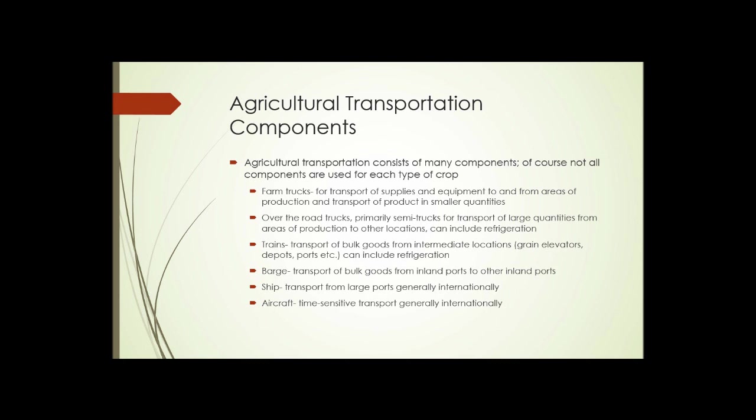Next, barges. Barges transport bulk goods from inland ports to other inland ports. Primarily, barges operate on rivers. For instance, a port near Kansas City, Missouri on the Missouri River — goods can be transported down to the Mississippi River and down to a port in New Orleans, or they could be moved upriver to someplace in Illinois, Iowa, or Minnesota. Typically, you don't see barges on the open sea.